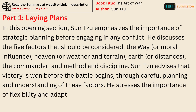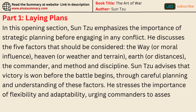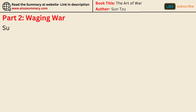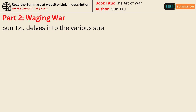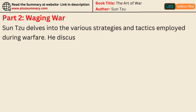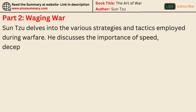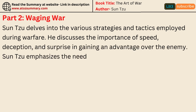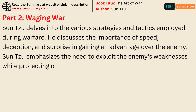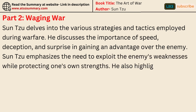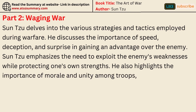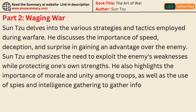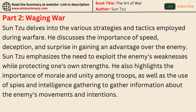Sun Tzu delves into the various strategies and tactics employed during warfare. He discusses the importance of speed, deception, and surprise in gaining an advantage over the enemy. Sun Tzu emphasizes the need to exploit the enemy's weaknesses while protecting one's own strengths. He also highlights the importance of morale and unity among troops, as well as the use of spies and intelligence gathering to learn about the enemy's movements and intentions.